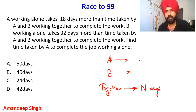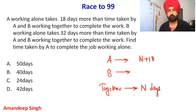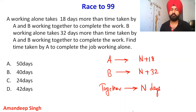So A working alone takes 18 extra days more than the time taken by A and B working together, while B takes 32 days more to finish the same work compared to when they work together.